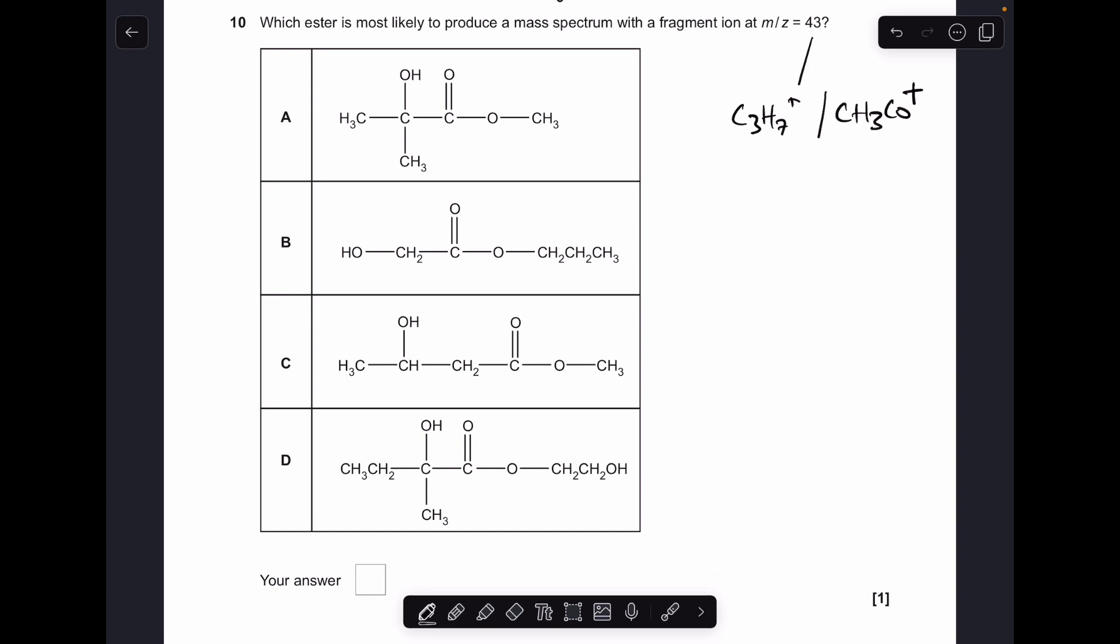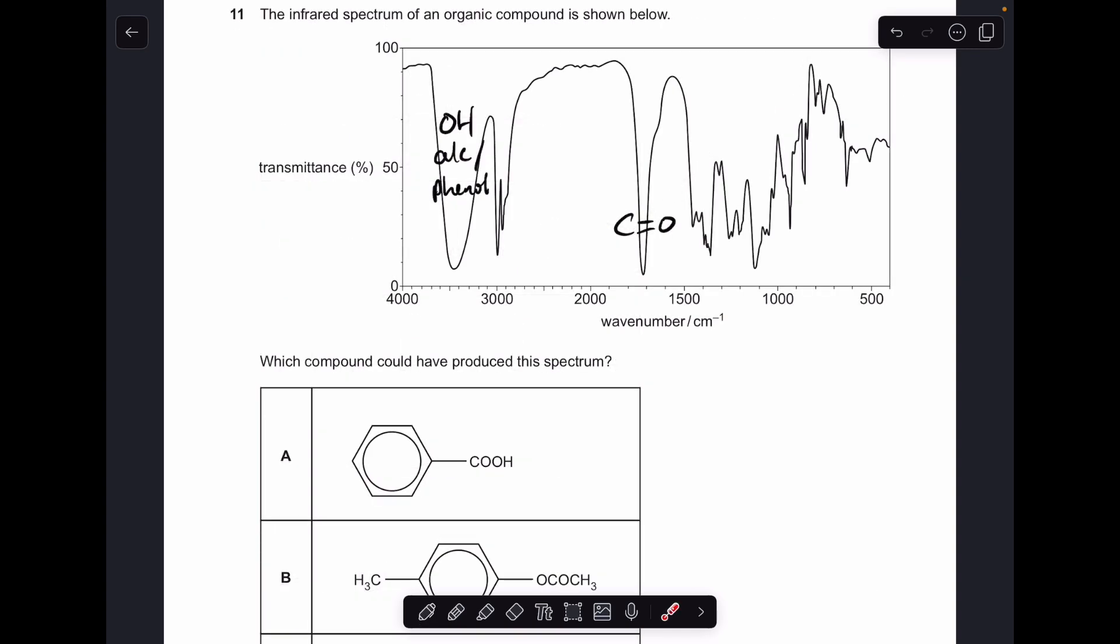Number ten. The fragment ion with an M over Z at 43 is something like C3H7+ or CH3CO+. And hopefully you can see in B you've got that C3H7+, so that was the answer.